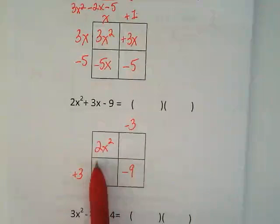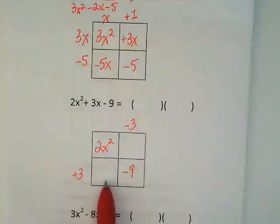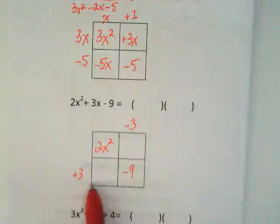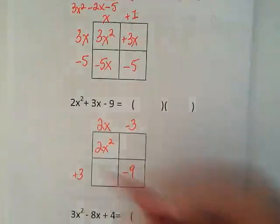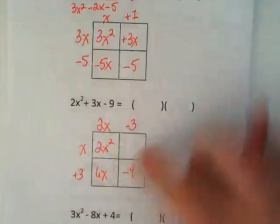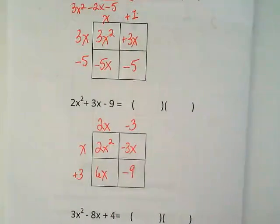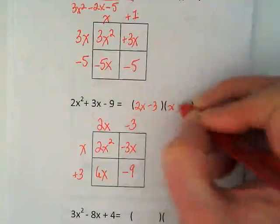To get 2x squared, I need a 2x times an x. I want the 3 to end up with some number in here that's bigger because this is positive. So whatever happens with these, the positive is going to be the furthest from 0. I'm going to put the 2x up here then because it's going to get us a 6x. That leaves me with x here. What's going to go in here then? Negative 3. And is it starting to work? Yes. So this is 2x minus 3 and x plus 3.